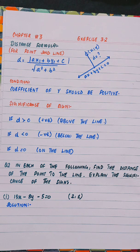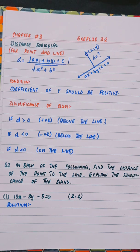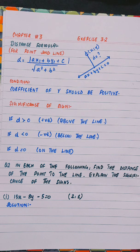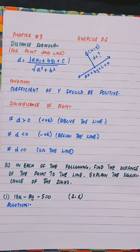The formula is: d is equal to mod of ax₁ plus by₁ plus c, divided by the square root of a² plus b². The condition is that the coefficient of y should be positive. The sign significance is: if d is greater than 0 (positive), the point is above the line; if d is less than 0 (negative), the point is below the line; and if d is equal to 0, the point is on the line.